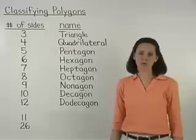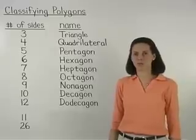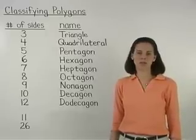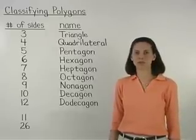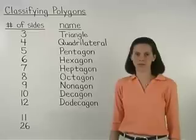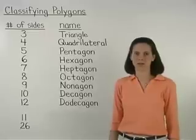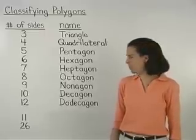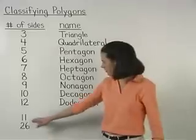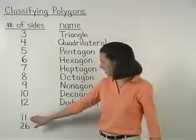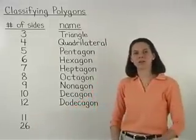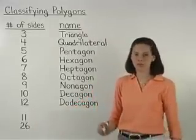Note that for other numbers of sides, we don't need to use special names for the figures. For example, if a polygon has 11 sides, we can just call it an 11-gon.